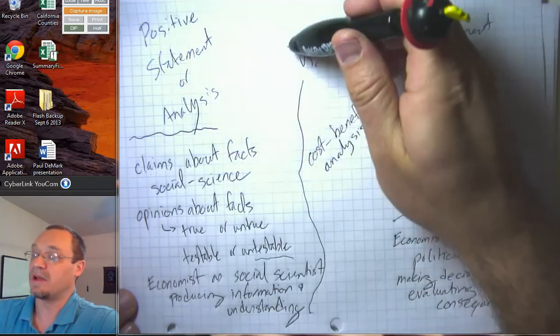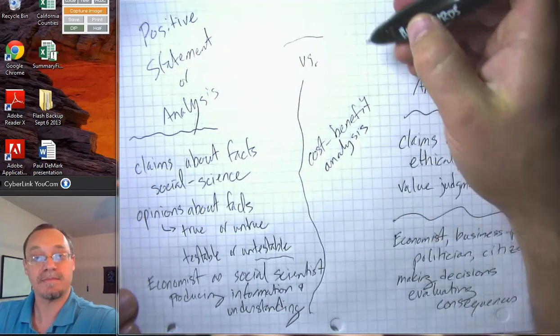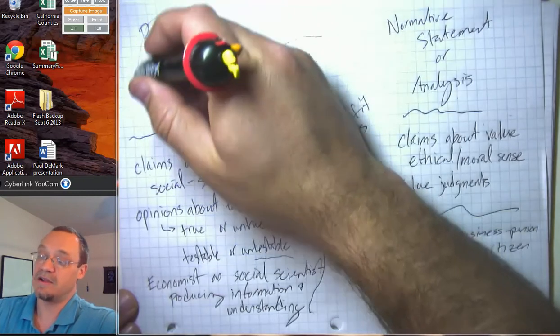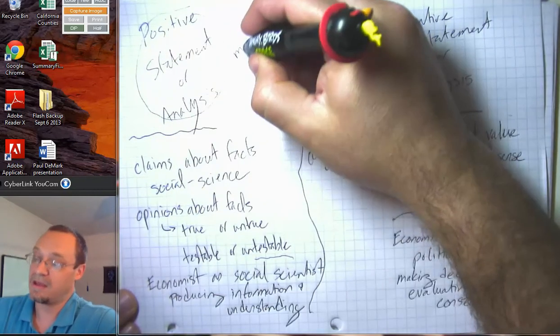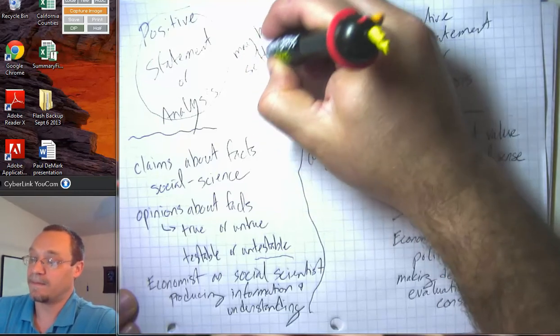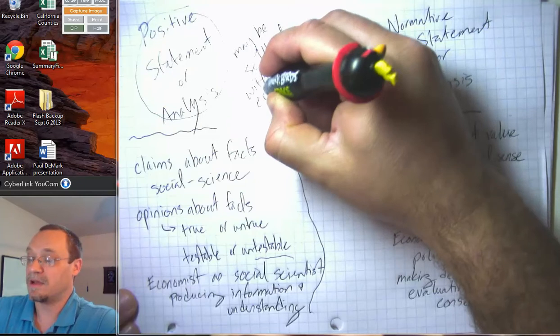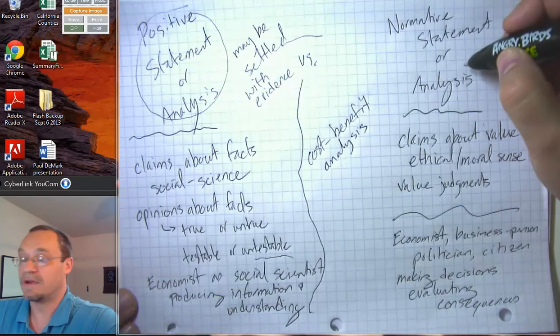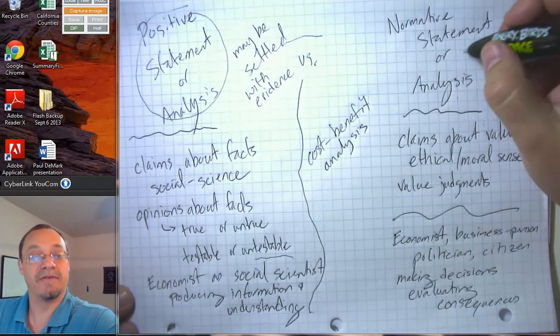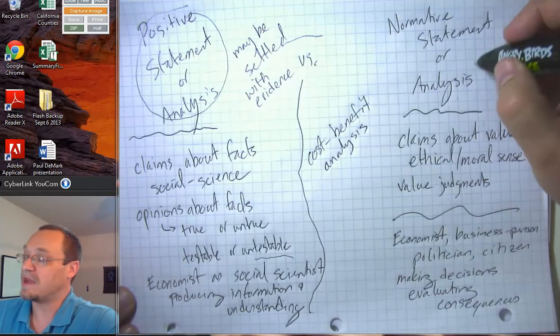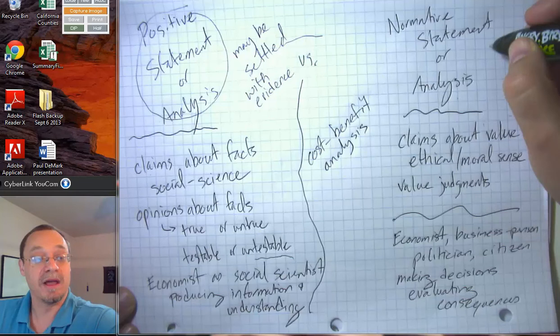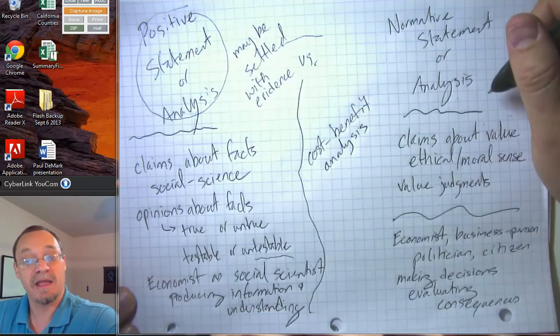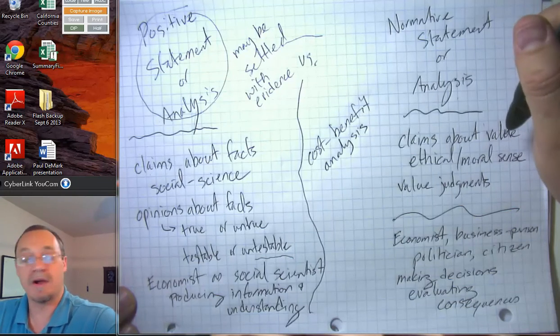I think it's important to realize when you're crossing this line and also important to realize that if you're having a discussion with someone, there's a good chance that positive discussions can be settled with evidence because these are questions of facts. On the other hand, normative discussions have to be engaged at a kind of a philosophical level. These have to be a more emotional discussion about what's important to us. That's a very different sort of discussion.